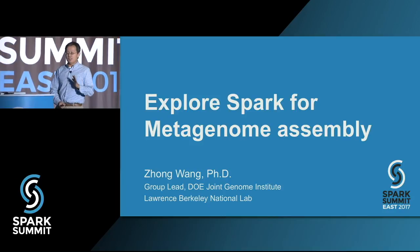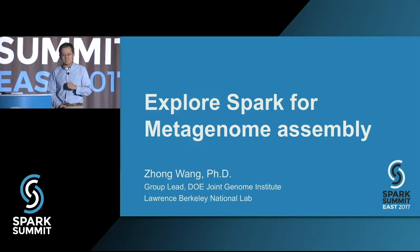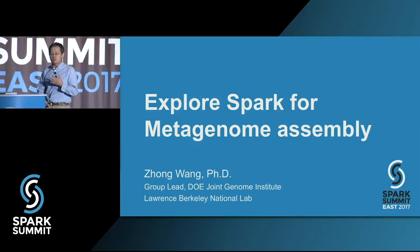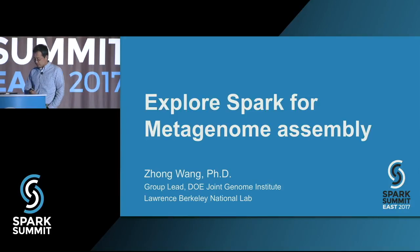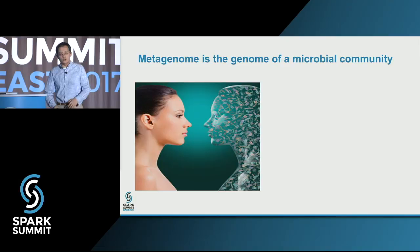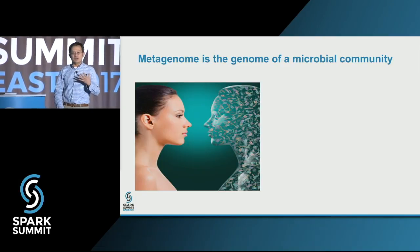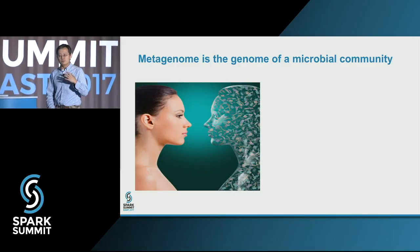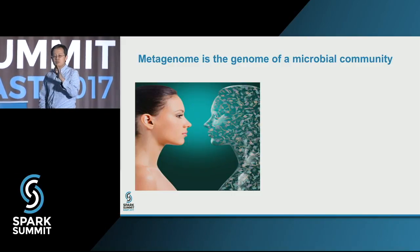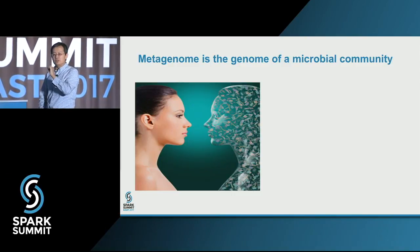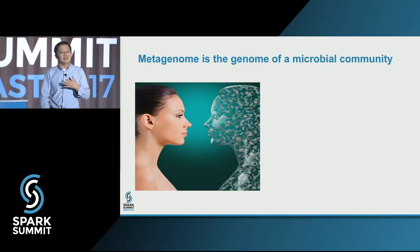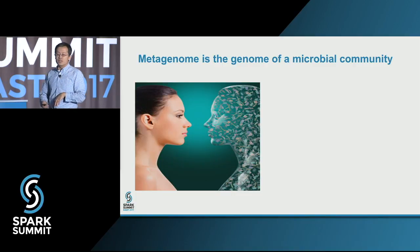I'm going to talk about an early exploration of using Spark to solve the metagenome problem. First, I'll explain what metagenome is. We know ourselves — sometimes I say 'I,' but in scientific terms, from a metagenome perspective, a metagenome is really a community of microbes. We have a lot of microbes that live with us. When we say 'we' or 'us,' it means I and the microbes that live with me.